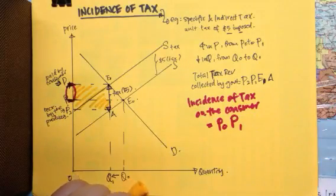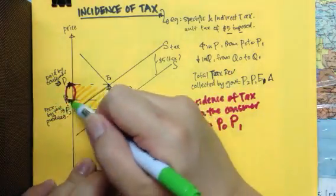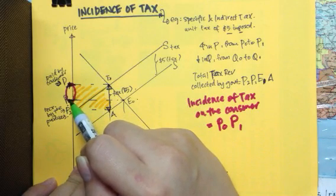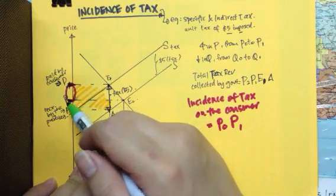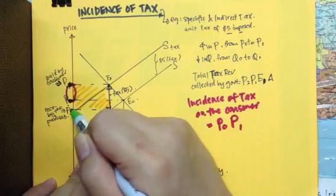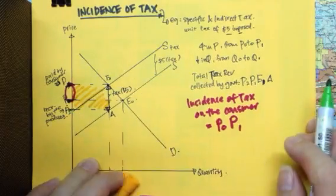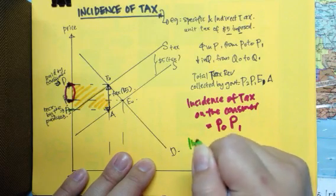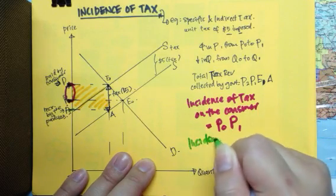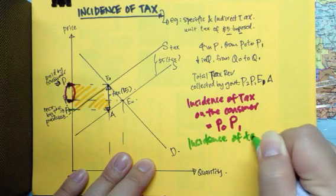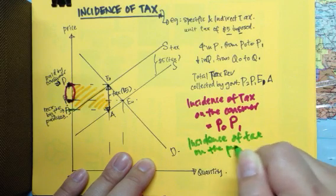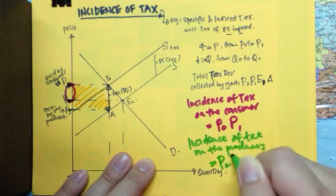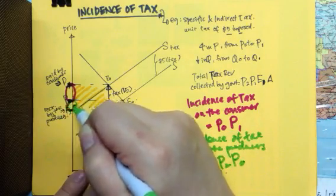On the other hand, as we mentioned earlier on, this P0 is the price that is received by the producer. But due to the imposition of tax, P2 will be the new price that is received by the producer. Therefore, incidence of tax on the producer will be P2, P0, this area.